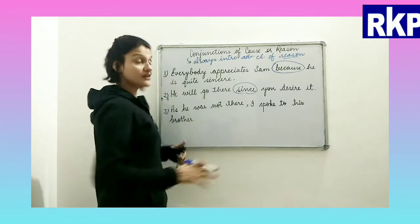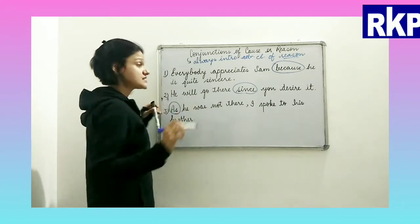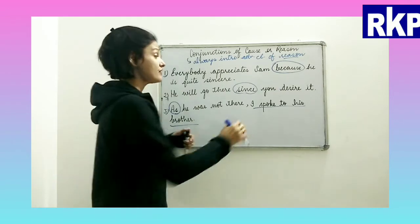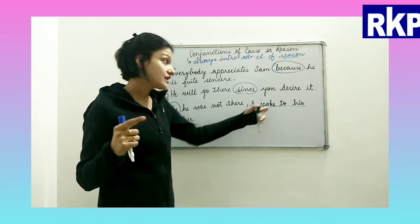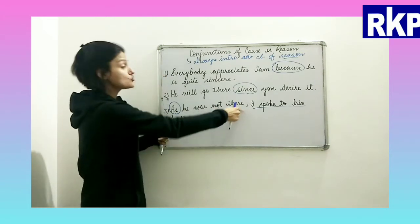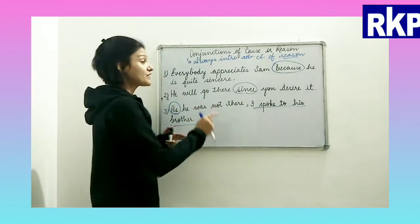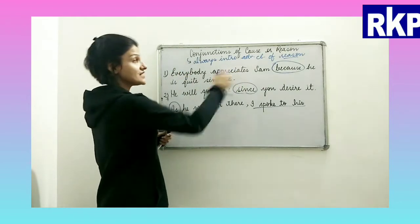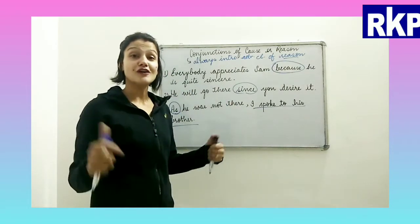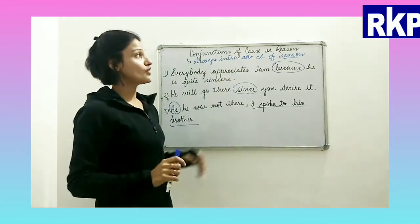'As he was not there, I spoke to his brother.' 'As' here is the subordinating conjunction of cause or reason. 'I spoke to his brother' is the independent clause. Why did I speak to his brother? As he was not there — that is the reason the concerned person was not there, so I spoke to his brother. The conjunctions of cause or reason are: because, since, and as.